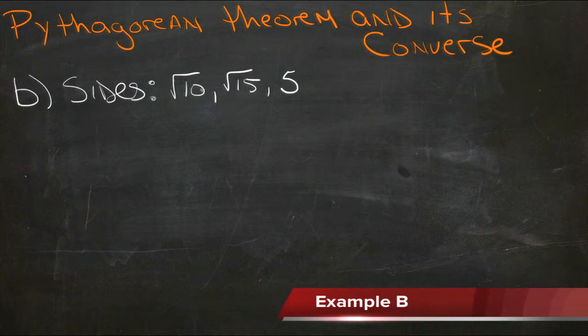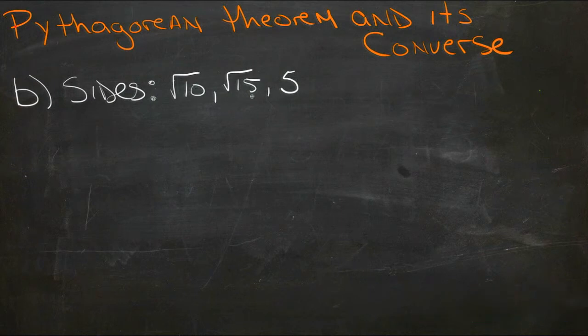√10, which should be a little bit more than √9, which would be 3, so that's going to be smaller than 5. The √15 would be a little less than 4, because √16 would be 4, so it's also less than 5. So √10 and √15 are our two shorter sides.